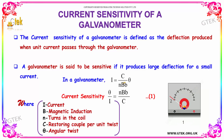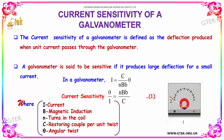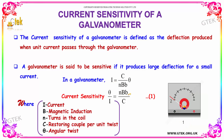In a galvanometer, the current i is equal to c divided by n into B into b into theta, where i is the current, c is the restoring couple per unit twist, n is the number of turns, B is the induction, b is the length, and theta is the angle of twist. So, theta divided by i is equal to n into B into b divided by c.